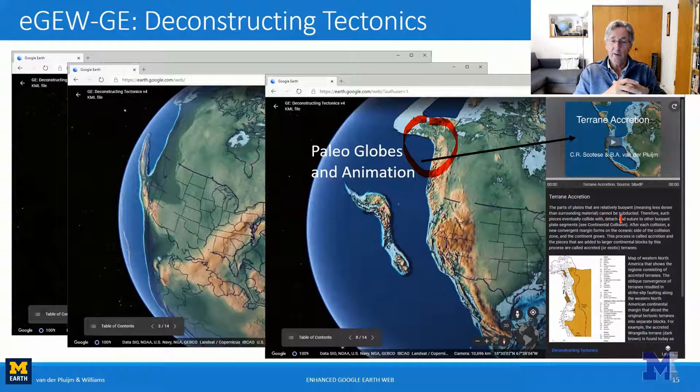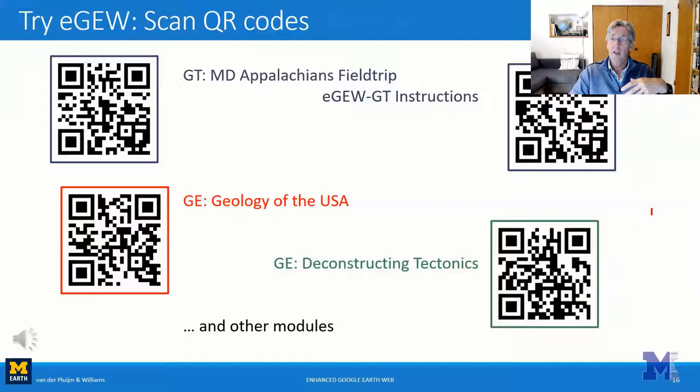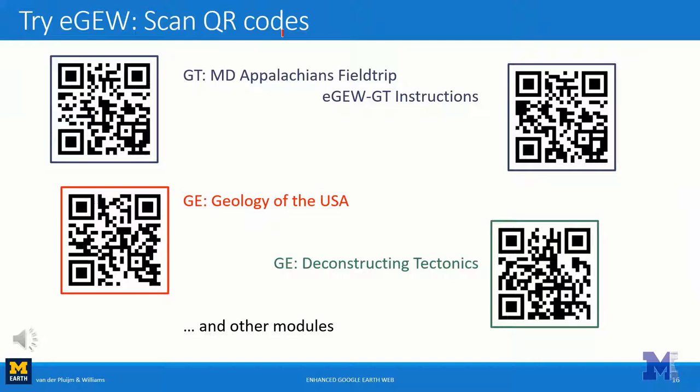Google Earth Web can really help instructors and students work with and make use of this geographic and geologic data. Here are the QR codes again — play around with these various things and you'll find it's not that hard to do yourself. We have multiple other modules in various stages of completion. Once you have this setup, you can really develop instructional activities and research activities in the same way. I hope this will be useful as you transition from the desktop version to Google Earth Web, which gives the same functionality in a much easier way — including on your phone.